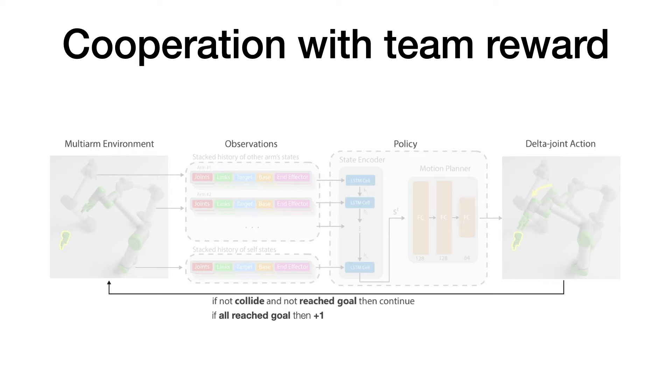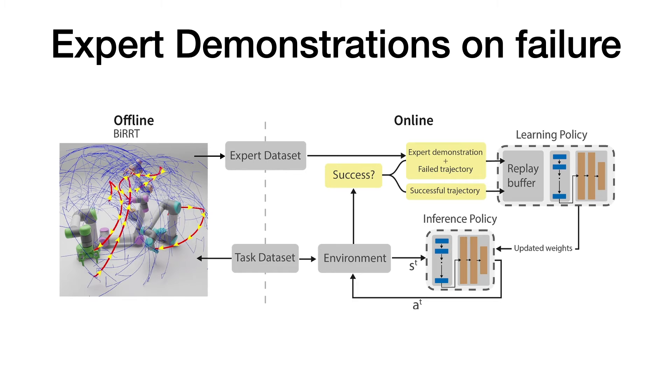We incentivize arms to cooperate with a team reward, where each arm is rewarded only when all arms in the system reach their targets. However, this makes the rewards sparse. To address this sparse reward problem, we guide the policy's learning with expert demonstrations from bidirectional RRT, computed offline for the task dataset.